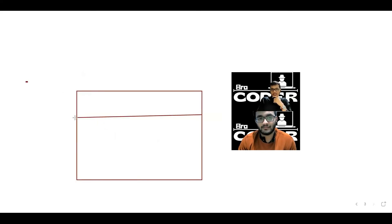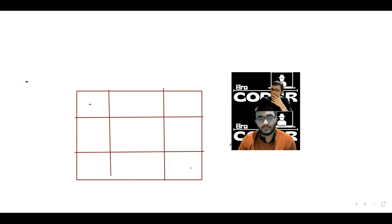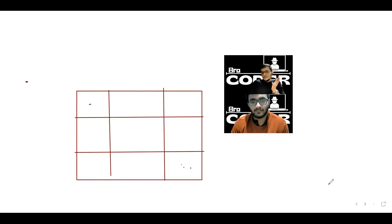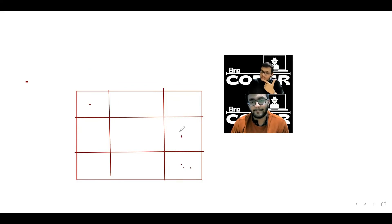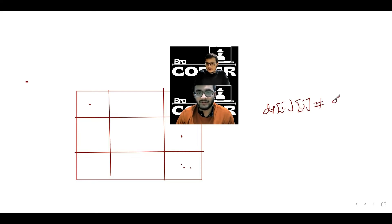Shubh, you can think that suppose this is your DP table and you are here — you have to come from here. Now Shubh, if you are here, in the DP approach we had the number of ways to come to that cell. In this case, number of ways to come to that cell — in this cell, how many ways? There are two ways to come from one to one. So I just got the number of ways to go to that cell.